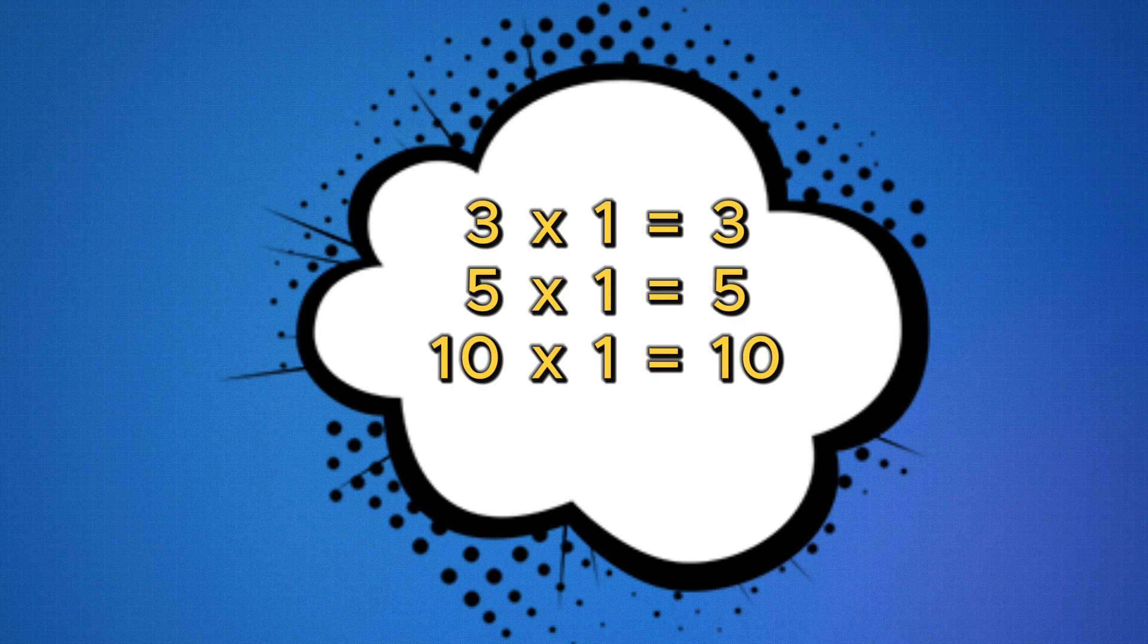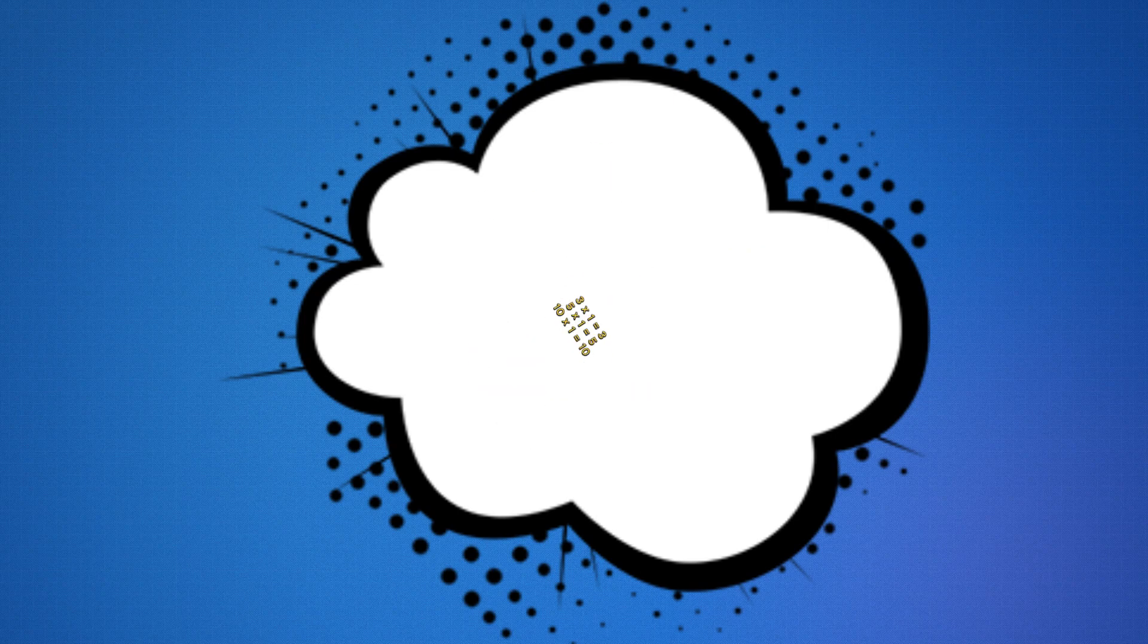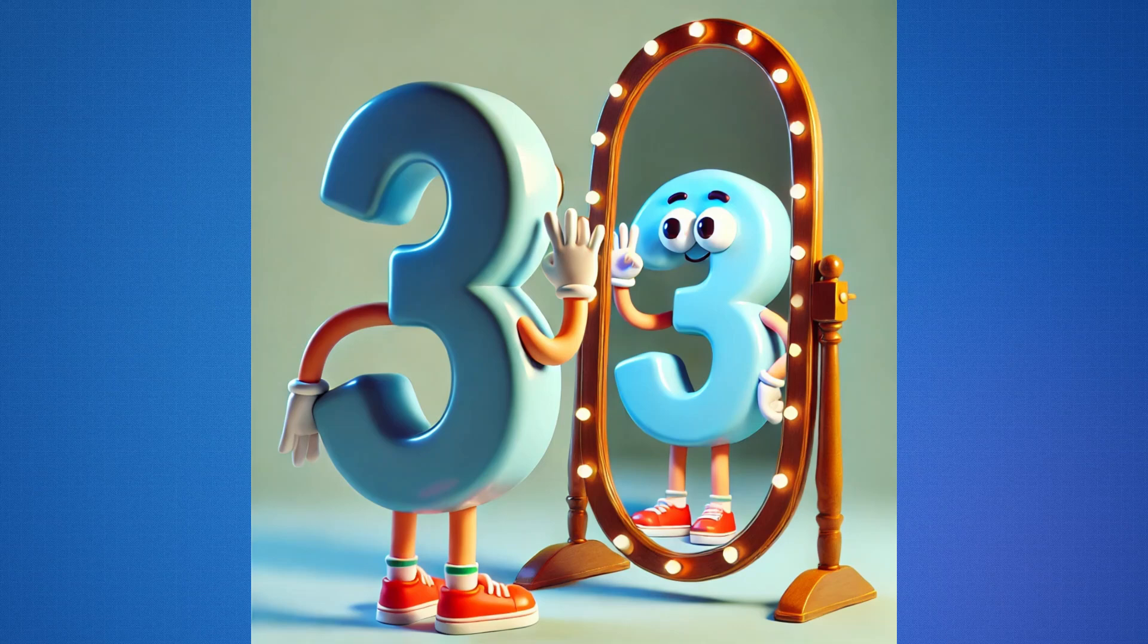When you multiply any number by one, the number stays the same. Take a moment to look at these examples. It's like a mirror. It reflects the number right back at you.